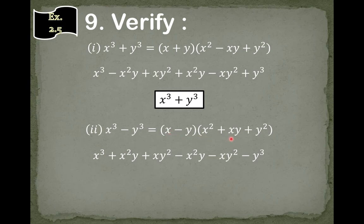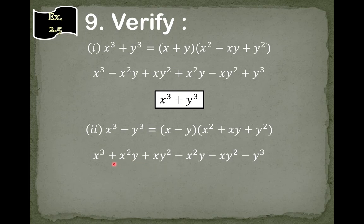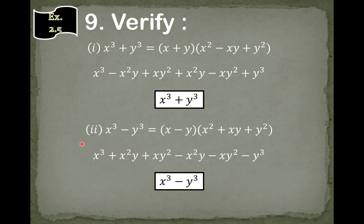Multiplying x by x square gives plus x cube. Multiply x by plus x y gives plus x square y. Then x by plus y square gives plus x y square. Now multiply minus y by plus x square, so this is minus x square y. Then minus y by plus x y gives minus x y square. And minus y multiplied by plus y square gives minus y cube. Here the plus x square y and minus x square y cancel out, and the plus x y square and minus x y square cancel out. So we have x cube minus y cube, and we have verified this.